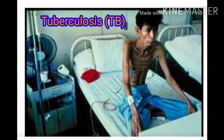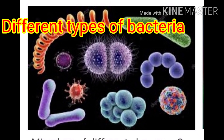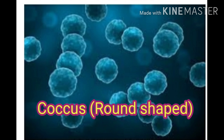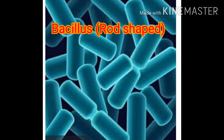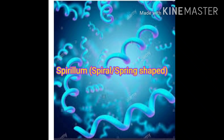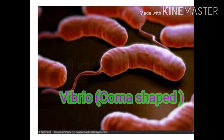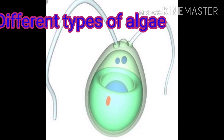Bacteria are classified according to their shape. They are coccus bacteria or round-shaped bacteria, bacillus or rod-shaped bacteria, spirillum or spiral or spring-shaped bacteria, and vibrio or comma-shaped bacteria.